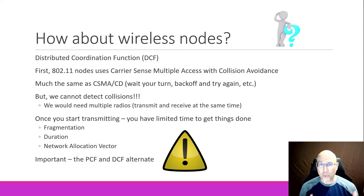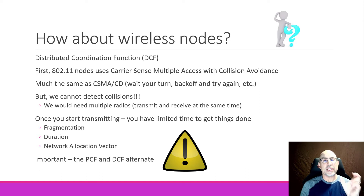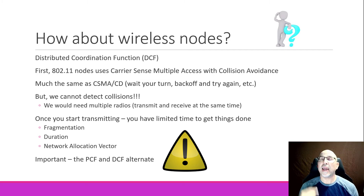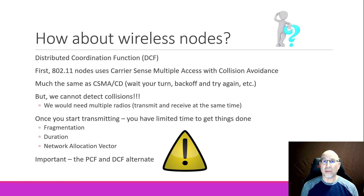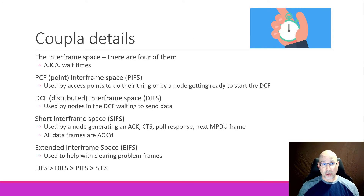Here's an important idea: the PCF and DCF — these two contention-free and contention time periods — alternate back and forth to allow the access point to get its stuff done and allow the nodes to send their data. Here are a couple more details we need to really understand what's going on.